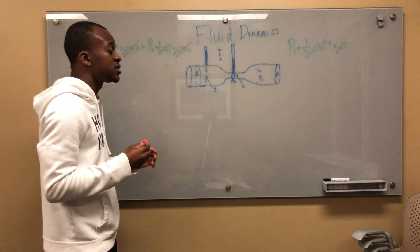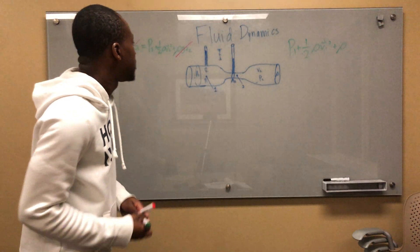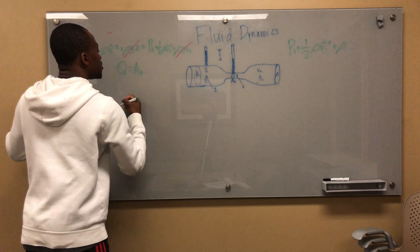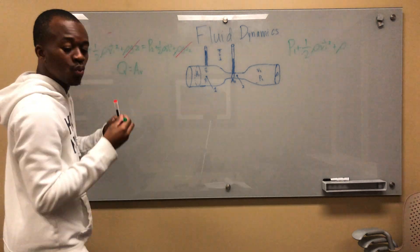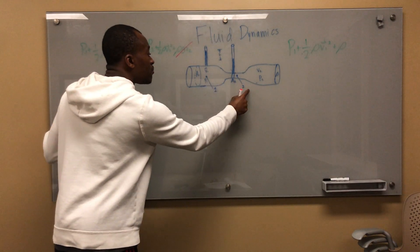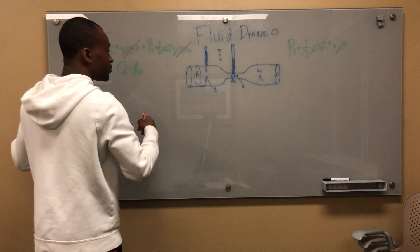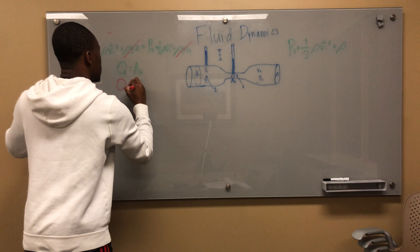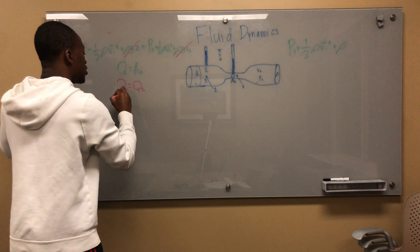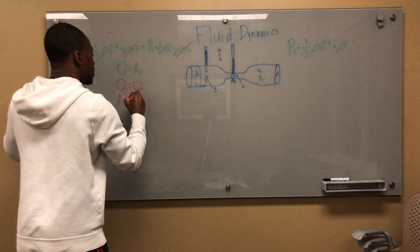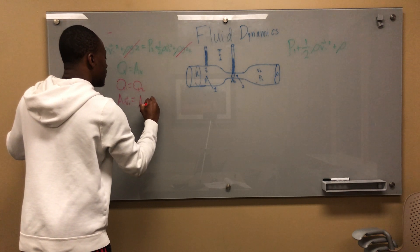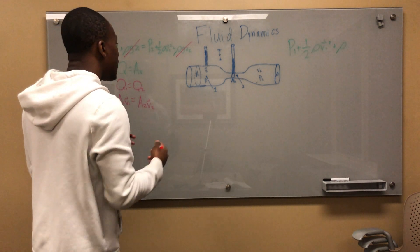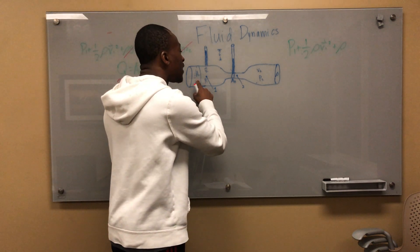And now what I also want you to notice: because of the continuity equation, it says that Q is equal to A times V. So basically, my Q1 is equal to Q2. This is point 1, point 2. So my Q1 is equal to my Q2, which means I can say that my A1V1 is equal to my A2V2. And that being said, like I said before, if this is a bigger area and this is a smaller area...